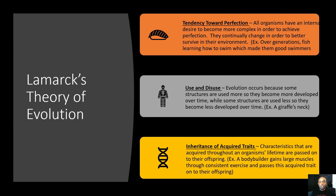Let's take a look at Lamarck's theory of evolution, which ultimately proved to be inaccurate. Lamarck believed that all organisms had a tendency towards perfection — an internal desire to become more complex in order to achieve perfection, continually changing to better survive in their environment. For example, in his mind, fish became great swimmers to escape predators and capture prey. Over many years, fish want to achieve this perfection and become great swimmers to better survive. He also had the idea of use and disuse — evolution occurs because structures used more become more developed, while structures used less become less developed, such as a giraffe's neck.